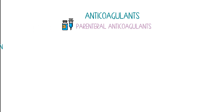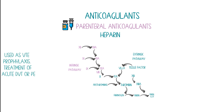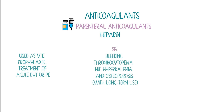Now let's talk about anticoagulants — these agents work on the coagulation cascade. Starting with parenteral anticoagulants: first, we have heparin, which accelerates antithrombin III, a natural negative feedback to the coagulation cascade that works slowly. Antithrombin decreases the amount of thrombin produced, resulting in less activated factor 10. This limits thrombus expansion by decreasing fibrin. It is used as VTE prophylaxis and for treatment of acute DVT and PE. Side effects include bleeding, heparin-induced thrombocytopenia, hyperkalemia, and osteoporosis with long-term use. It is monitored by aPTT and the antidote is protamine.